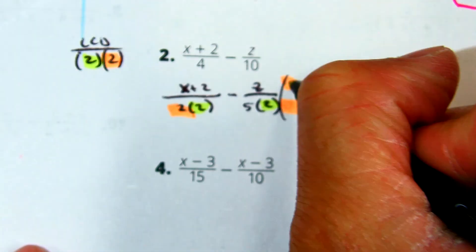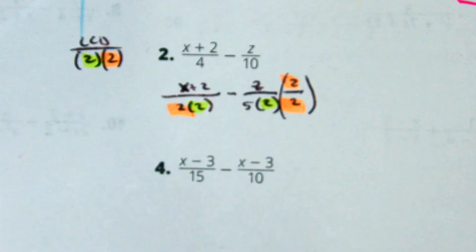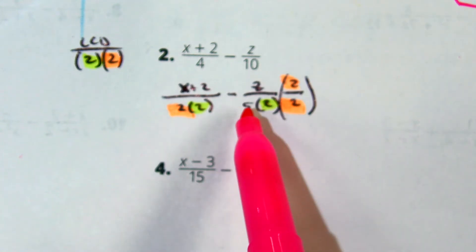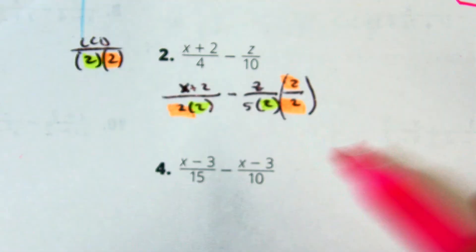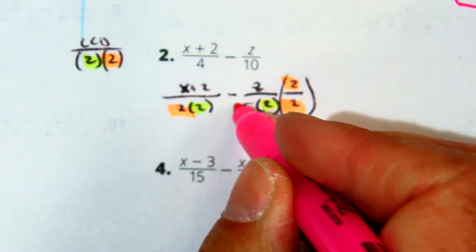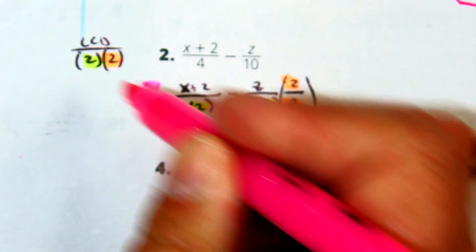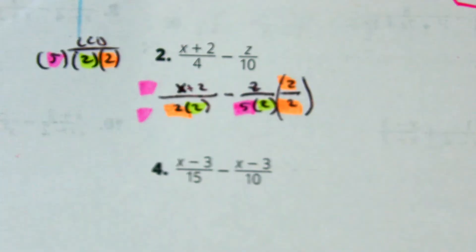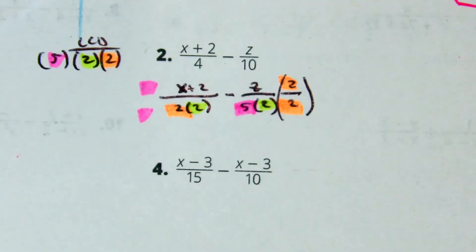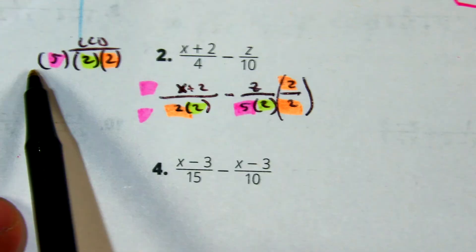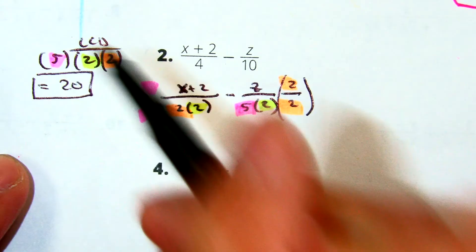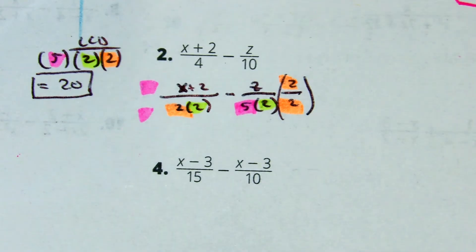So I'm going to have to multiply this one by 2 over 2. Class, what does the right side and its denominator have that this side does not have? 5. Class, what's 5 times 2 times 2? 20. So our LCD is 20. I'm trying to show you guys a different way of finding the LCD.